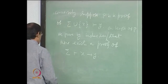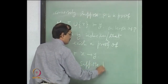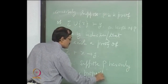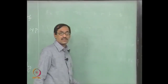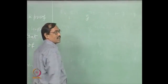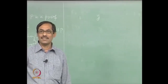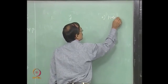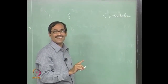Conversely, suppose P is a proof of sigma union x entails y. Our aim is to construct a proof of sigma entails x implies y. We prove by induction that there exists a proof of sigma entails x implies y. Induction on the length of P — that is, the number of propositions occurring in P, since P is a finite sequence of propositions.